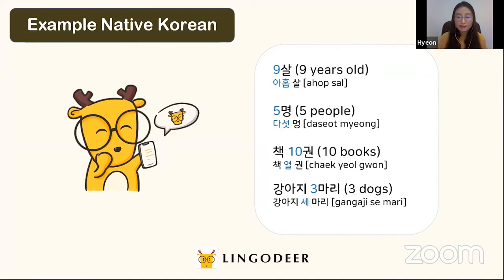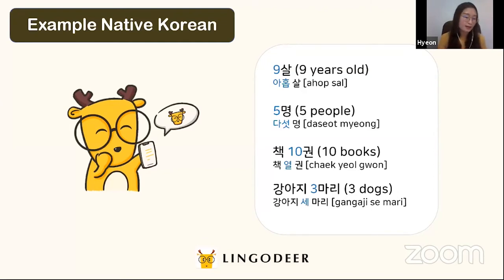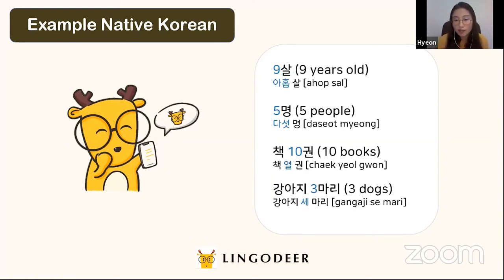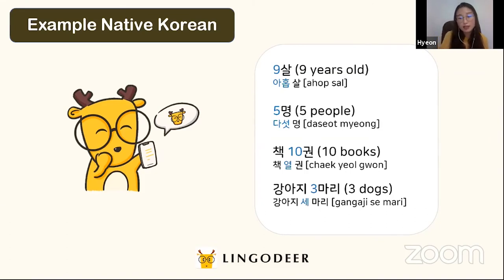And the last example: 강아지 세 마리 — three dogs. 강아지 means dogs, and 세 마리 is three (with animal counter). When counting, you use Native Korean number 세, not 삼 which is the Sino-Korean number. 강아지 세 마리.